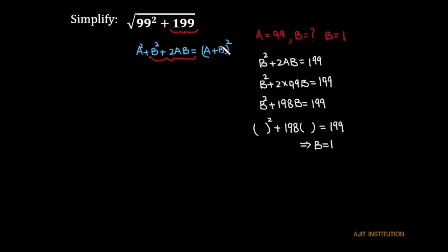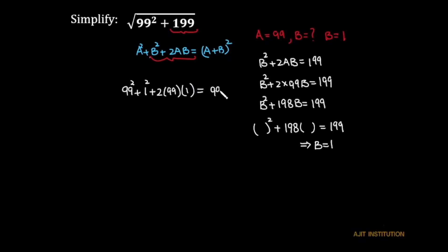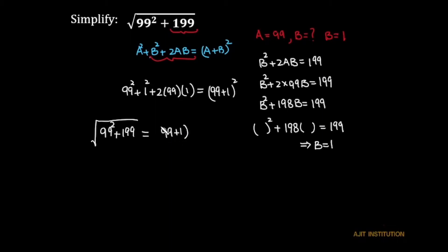Let us solve the expression by putting the values of a and b. So the expression becomes: 99 squared plus b squared which is 1 squared, plus 2 times a which is 99 times b which is 1. This is equal to (99 plus 1) squared.